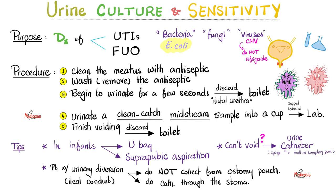Some tips for the pros: in infants, we collect urine into something called the U-bag or by suprapubic aspiration — it's not as dangerous as it sounds. What if the patient is hospitalized and cannot void? Then we insert a urinary catheter and use a syringe to collect the urine sample through the built-in sampling port. After you withdraw the specimen, remove the clamp. What if the patient had a urinary diversion surgery known as ileal conduit? Do not collect the sample from the ostomy pouch — you should do catheterization through the stoma, not the pouch.